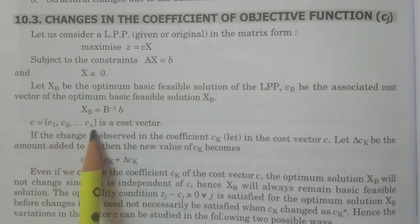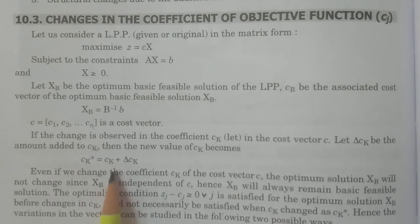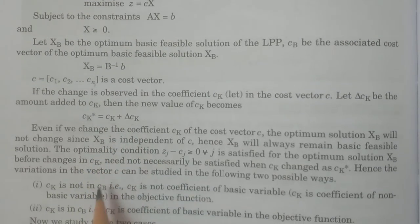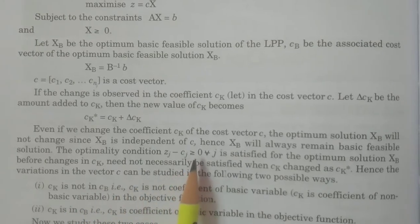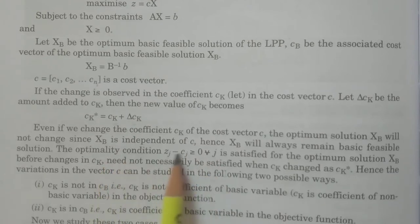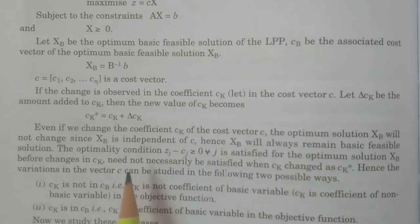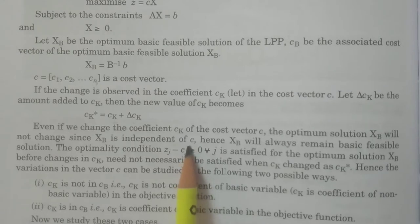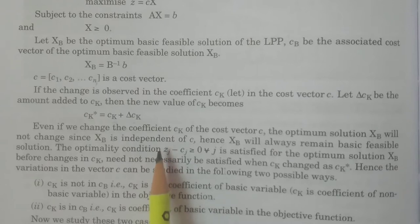ck is one of the particular coefficients in the objective function in which the change is going to be observed. Even after the change in coefficient ck, because the basis xB is independent of c, the optimum solution will not change. That is the first point you have to understand: xB is the optimum solution and does not depend on the cost c, therefore xB does not change.